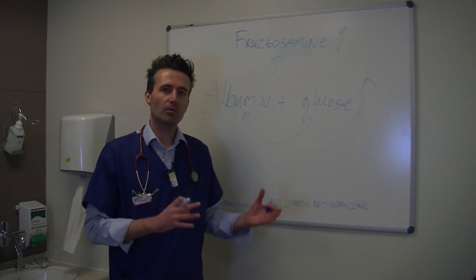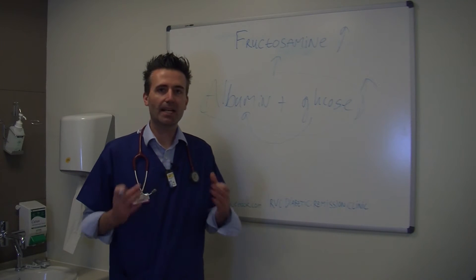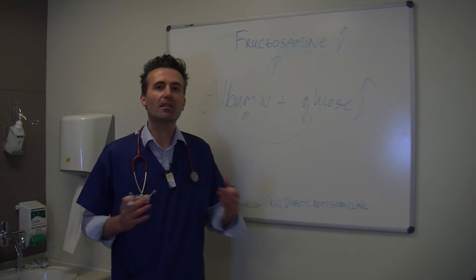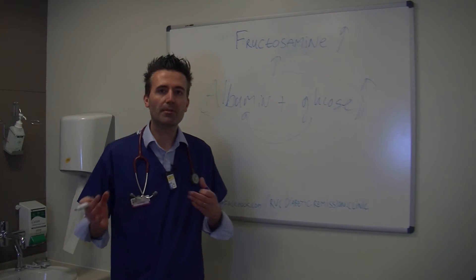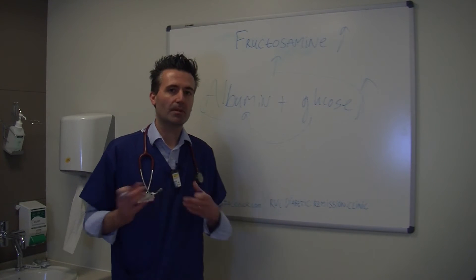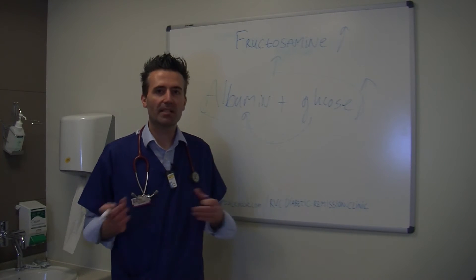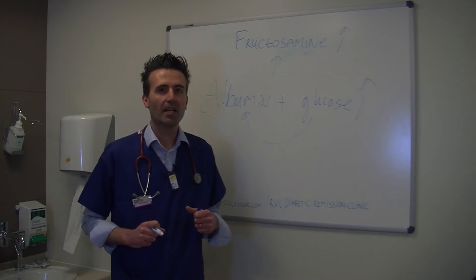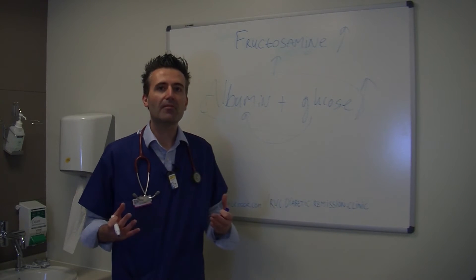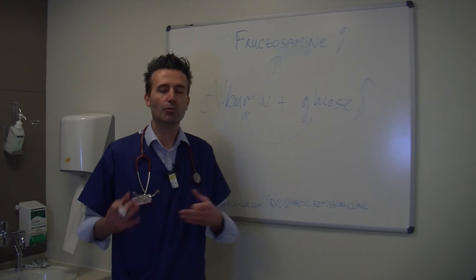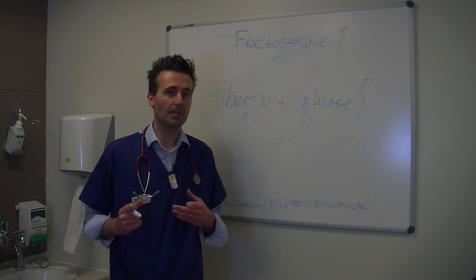It's a bit different between dogs and cats. In cats it represents more or less the last two or three weeks, whereas in the dog it represents more or less the last three to four weeks. So it gives you an average of the glucose values during that period of time.